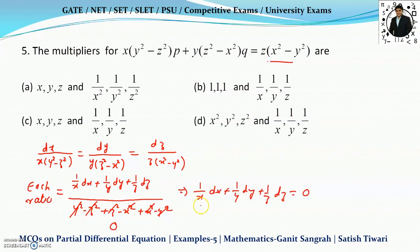So I can write this equation as 1 by x dx plus 1 by y dy plus 1 by z dz equals to zero. Now you can do the integration very easily and we can get the solution for that. So here we can say that 1 by x, 1 by y, and 1 by z is the set of multipliers.